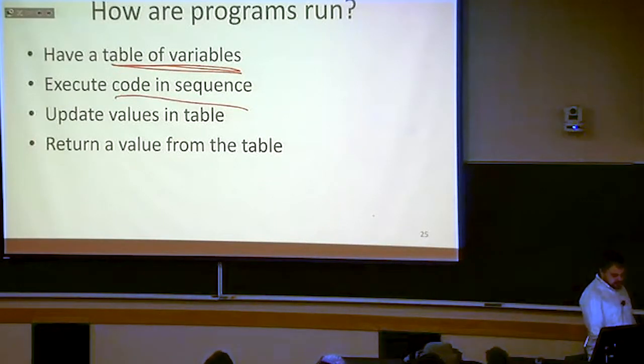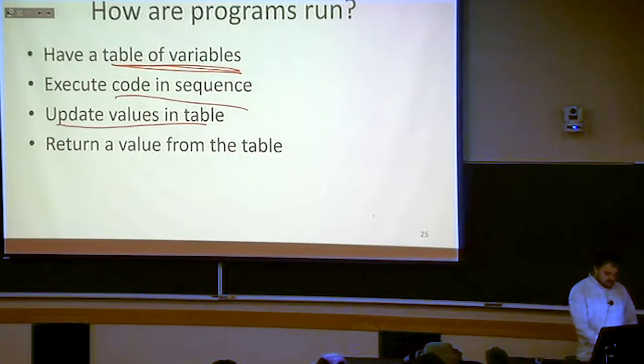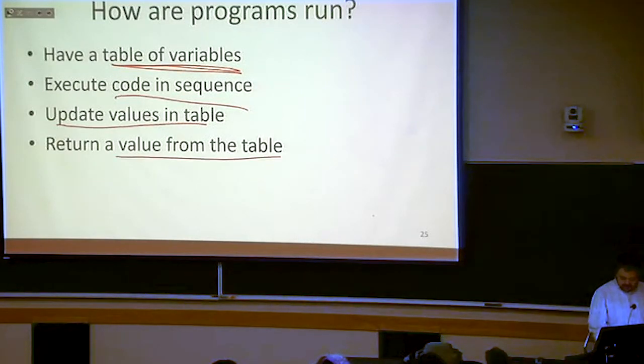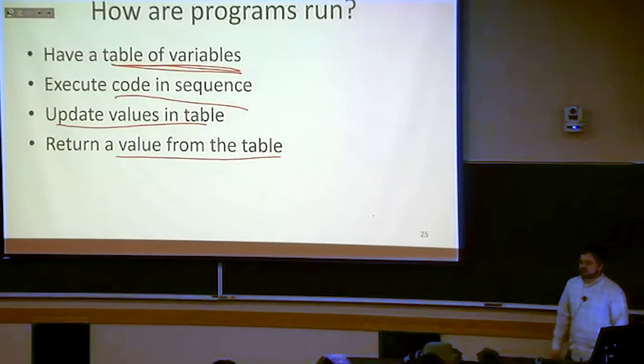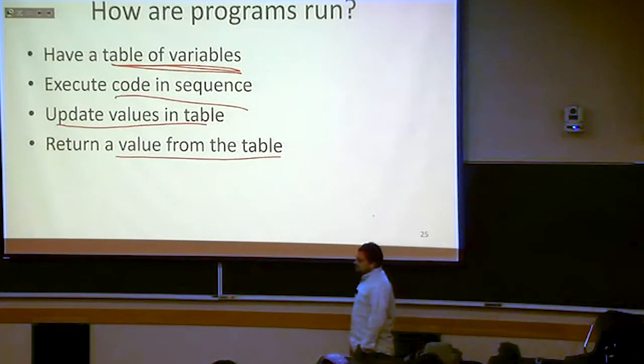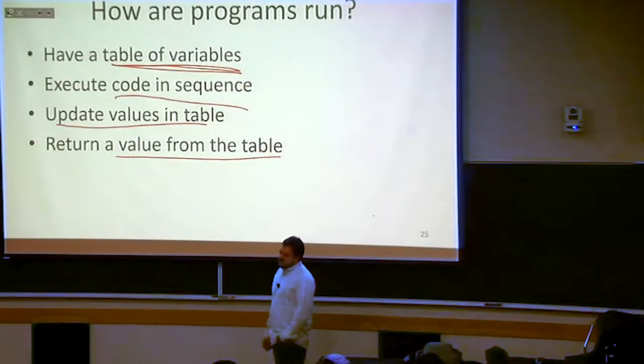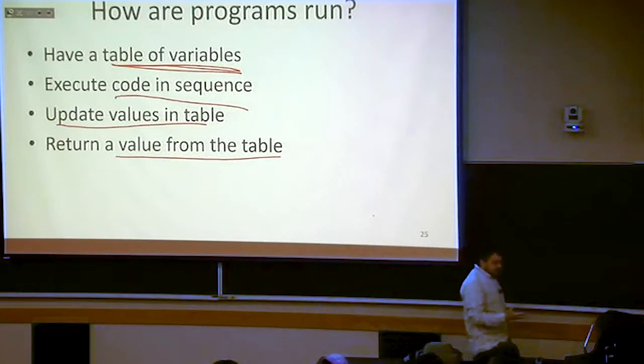You execute your code while updating the values in the table until eventually when you're done, one of those values in your memory is what you end up returning. At a super high level, this is what your computer does when it runs a program. We're going to do the same thing. We're going to write a NAND straight line program that does that same thing.